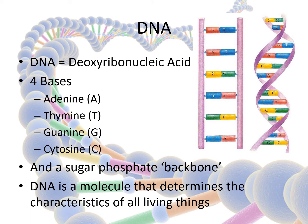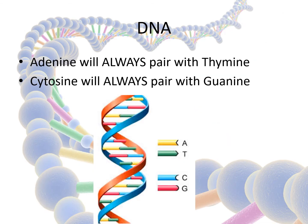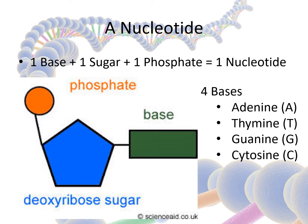DNA is the molecule that determines the characteristics of all living things. Adenine will always pair with thymine and cytosine will always pair with guanine. If we take one base, one sugar, and one phosphate and piece them together, we get what we call a nucleotide.